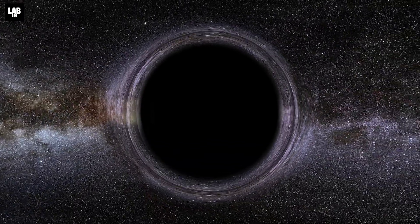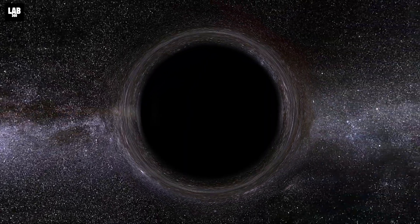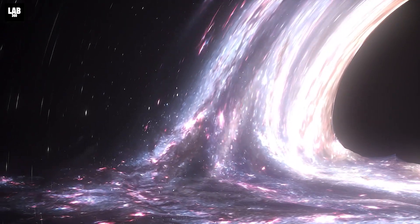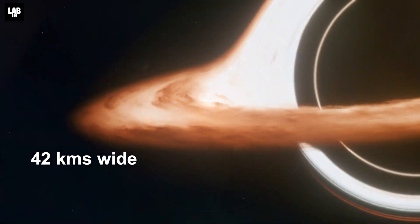This black hole at hand, according to the experts, has a mass of 7.1 times that of the Sun. Its event horizon, which defines the region of space around a black hole from which not even light can escape, is estimated to be 42 kilometers wide.